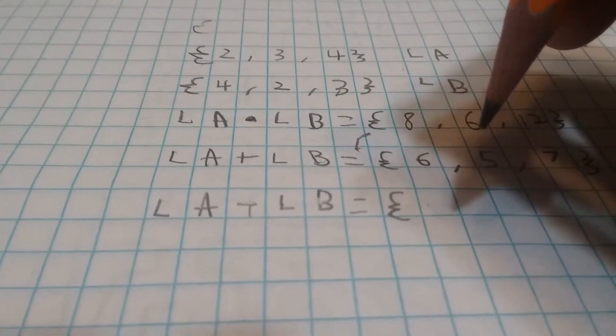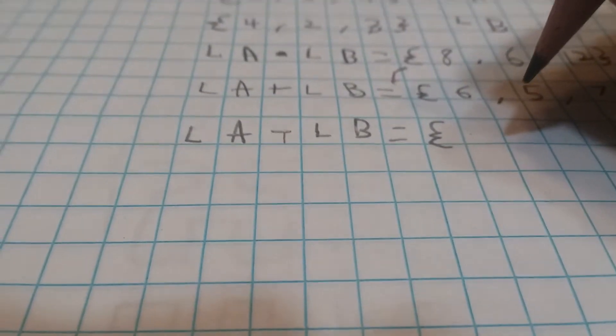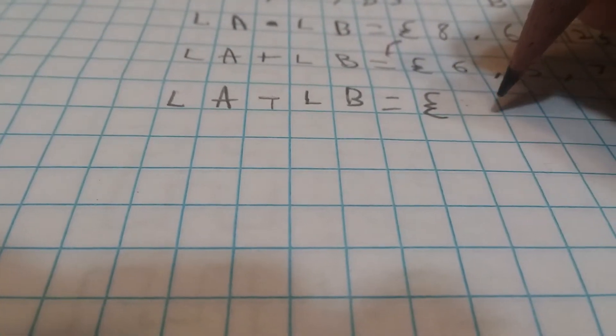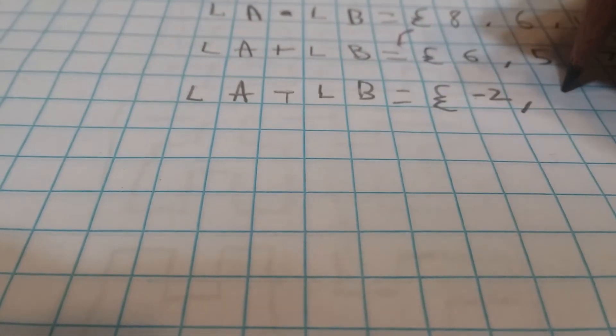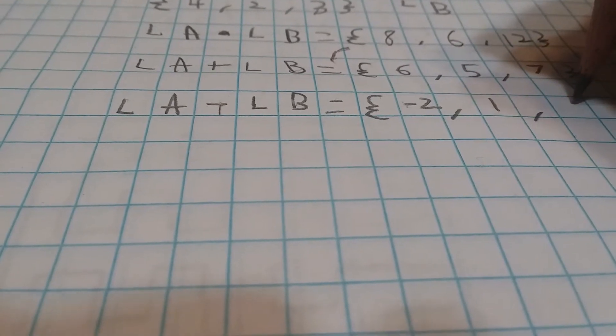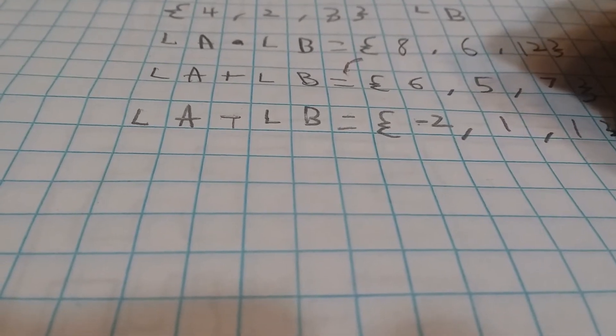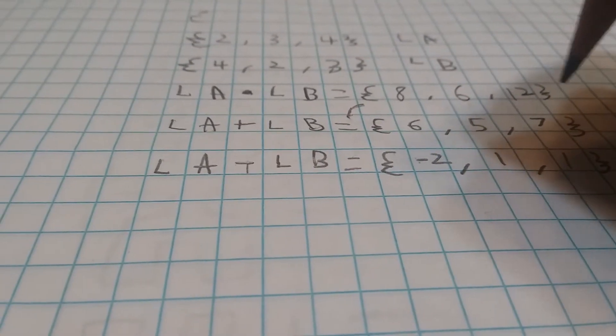The result for subtracting list A and list B, which here's a reminder of what that is. Is, let me, negative 2 and 1, 1 and 1. And that's basically lists.